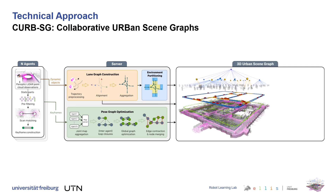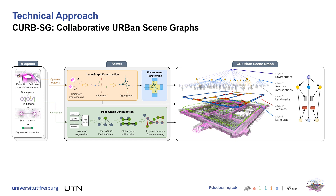The overall 3D urban scene graph consists of six layers. The root layer A denotes the entire environment. Layer B contains the partitioning into roads and intersections. In layer C, we register static landmarks to the street areas. Layer D refers to the other traffic participants detected by our agents. These vehicles are registered to the lane graph representing layer E. The final layer F corresponds to the keyframe-based pose graph with 3D point clouds from our collaborative LiDAR SLAM.